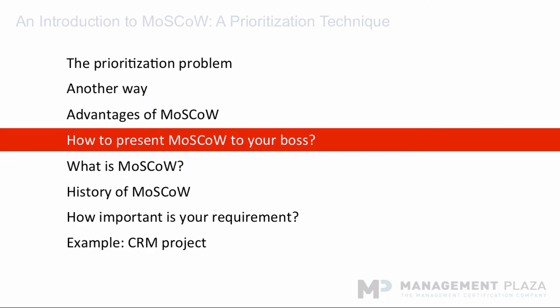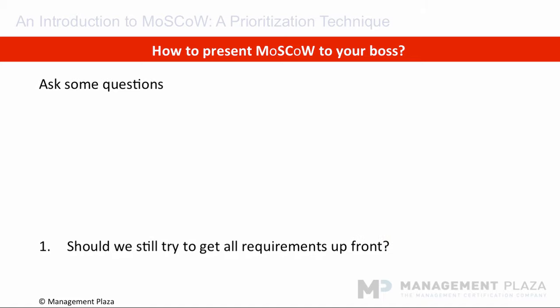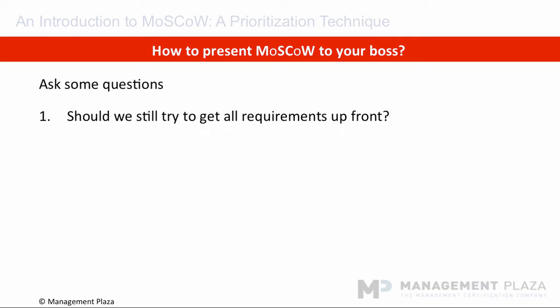Now you know how good Moscow is, but how do you explain this approach to your boss or the person who will pay for the project? The best way to present the value of Moscow is to ask these questions, as it will help get them thinking and hopefully get three yeses. Start with: it is practically impossible to get more than 50% of the requirements written down at the start of a software project. So, should we try to avoid this impossible task? The answer should be yes. If the answer is no, then it's time to update your CV.